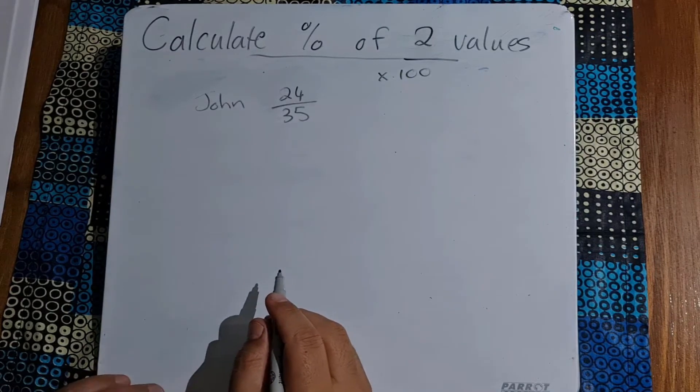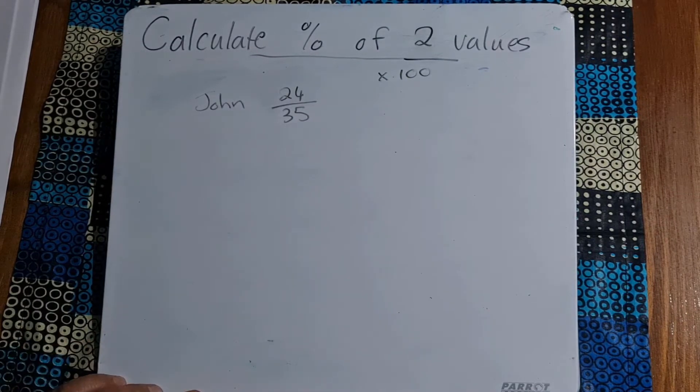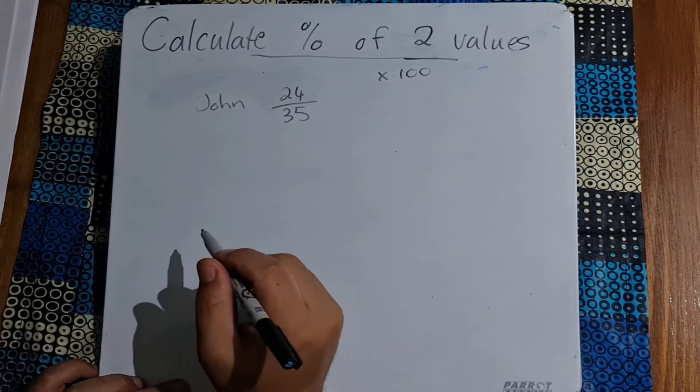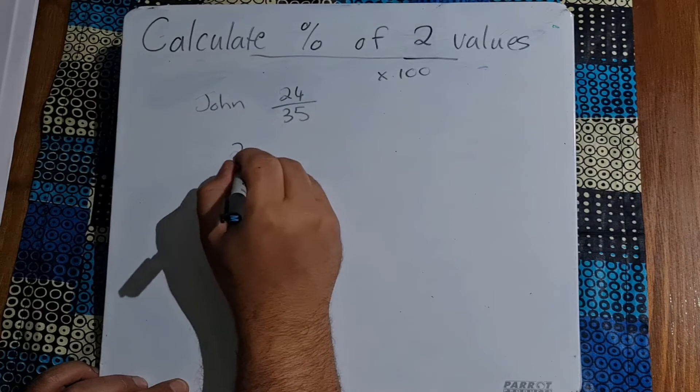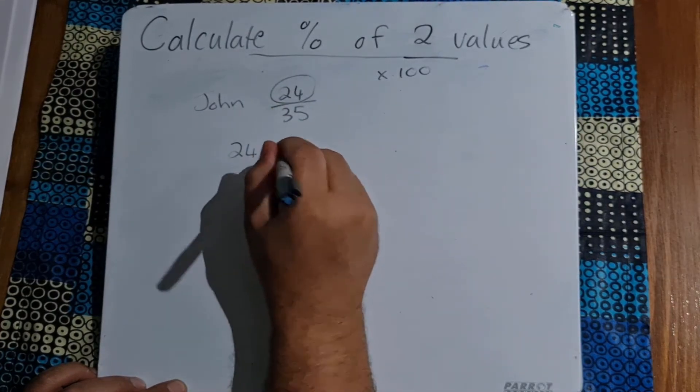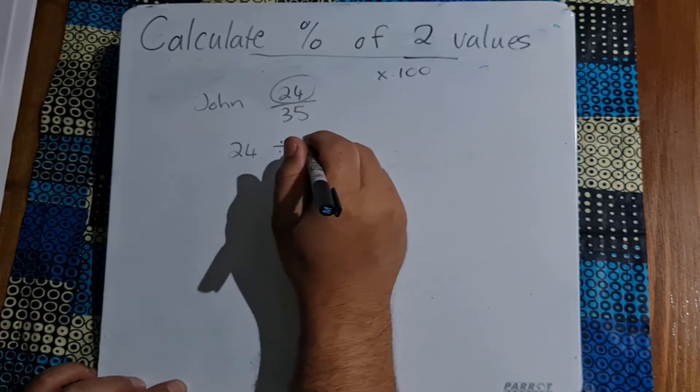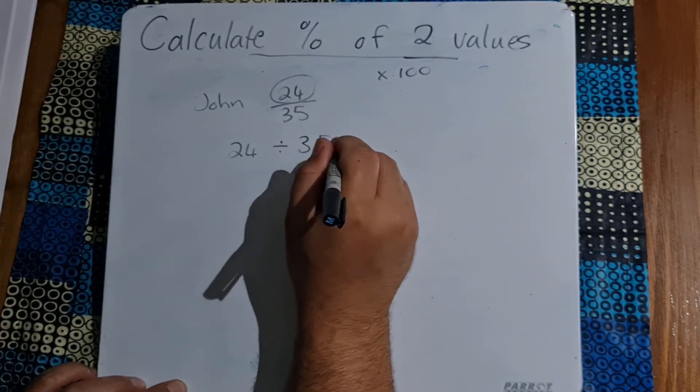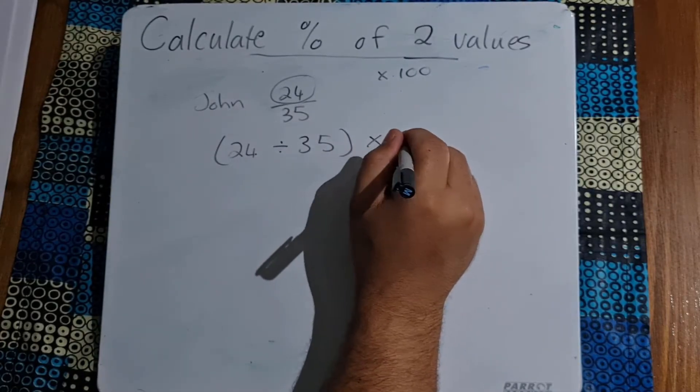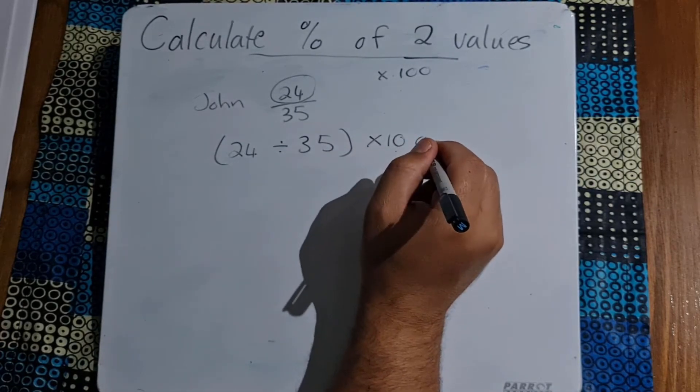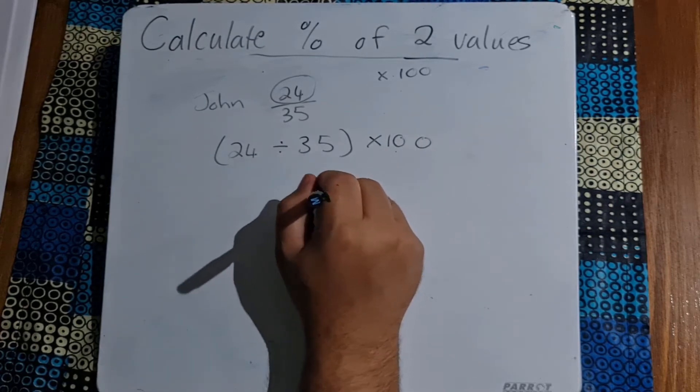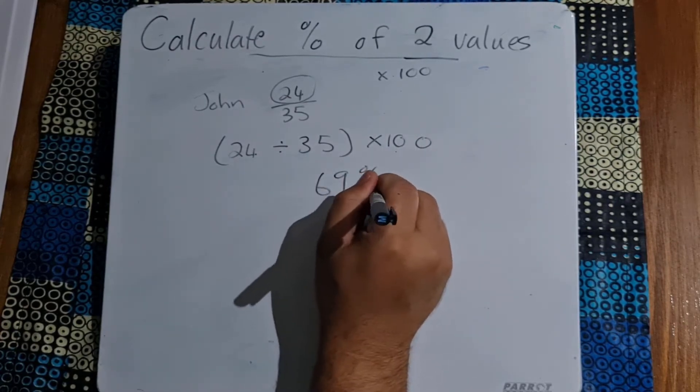In the previous video where we calculated with one percentage we had three different methods of doing this. We're going to show you a very simple method of doing this. All we're going to do is take 24, the top number, divide that by whatever it is out of, which is 35. We're going to get that answer and then multiply that by 100, and that'll give us around 69 percent.